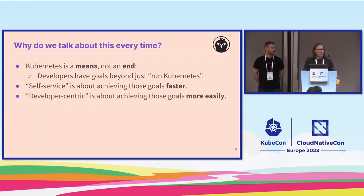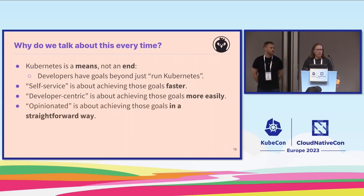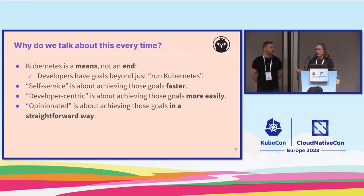The developer-centric part is about allowing developers to achieve their goals more easily by providing configuration tools that use semantics that make sense to an application developer. The opinionated part is about providing straightforward mechanisms that make a lot of sense, as opposed to mechanisms that can do everything but are ridiculously complex.